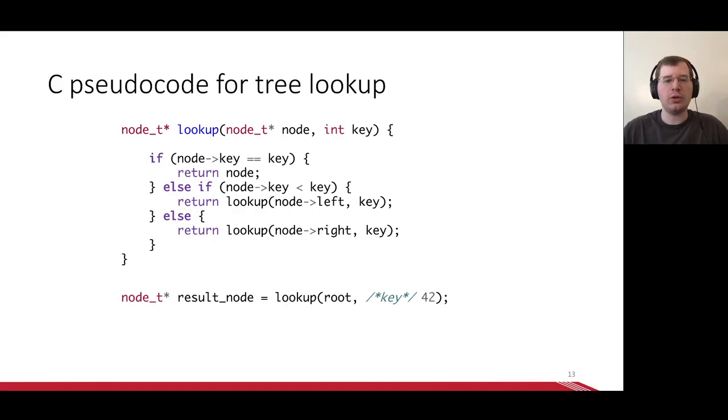We'll start with a traditional C function for walking a binary tree and convert it to a memory services task step by step. The lookup function takes a node pointer and a desired key. If the node and key match, it returns the node. Otherwise, it recurses on the left or right child.